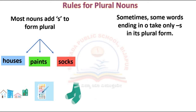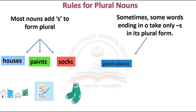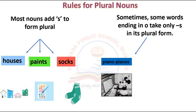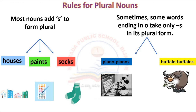Sometimes, some words ending in 'o' take only 's' in their plural form. For example, piano becomes pianos. However, buffalo becomes buffaloes.